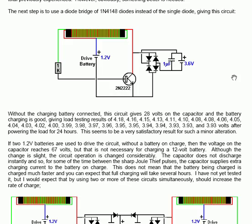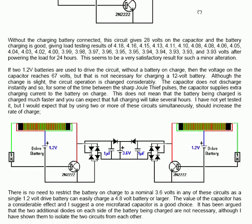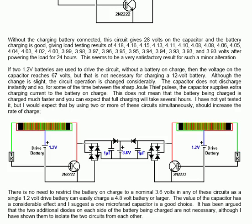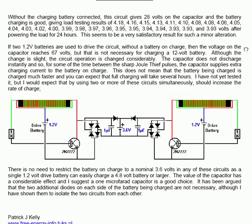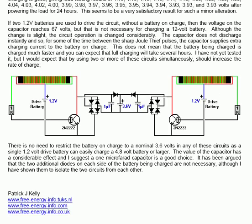If two 1.2-volt batteries are used to drive the circuit without a battery on charge, then the voltage on the capacitor reaches 67 volts. But that's not necessary for charging a 12-volt battery. Although the change is slight, the circuit operation is changed considerably. The capacitor does not discharge instantly, and so some of the time between the sharp Joule Thief pulses, the capacitor supplies extra charging current to the battery on charge. This does not mean that the battery being charged is charged much faster, and you can expect that full charging will take several hours. I have not yet tested it, but I would expect that by using two or more of these circuits simultaneously should increase the rate of charge.